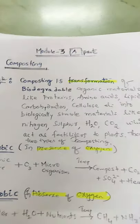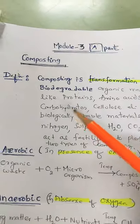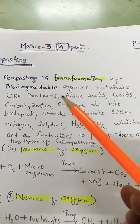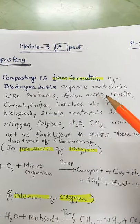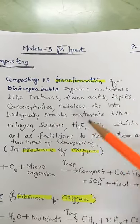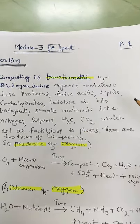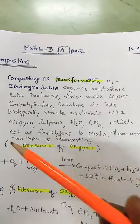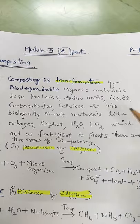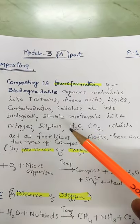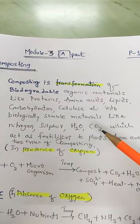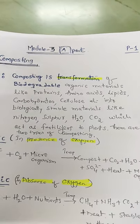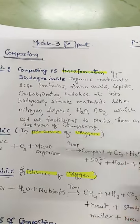Composting definition: composting is transformation of biodegradable organic materials like proteins, amino acids, lipids, carbohydrates into simple materials like nitrogen, sulfur, water and carbon dioxide, which act as fertilizers to plants.